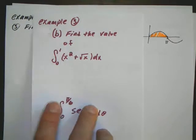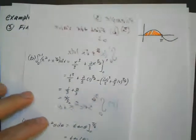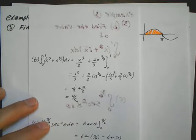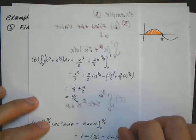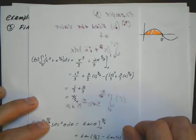Alright, so you should have tried the problems by now. And here's the solution that I got on the back. So for B, I went ahead and rewrote them with exponent properties and found the antiderivatives. And the answer I got was 4 over 3.